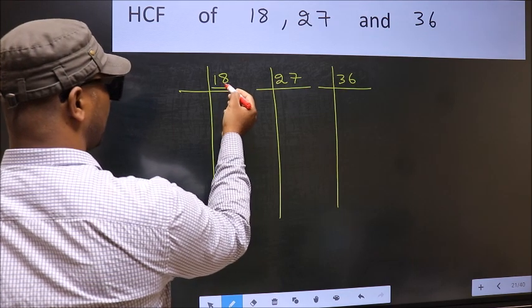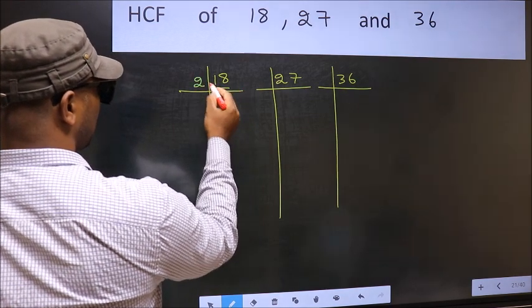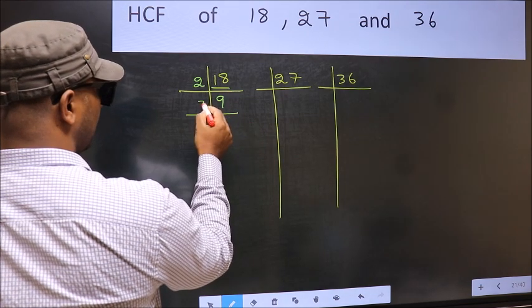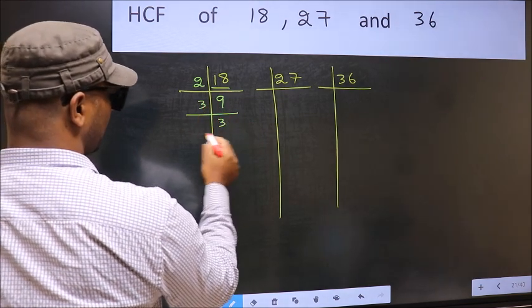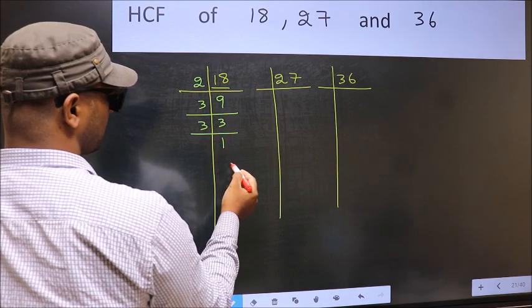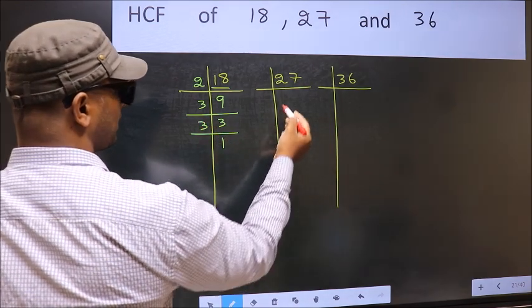Here you have 18. 18 is 2 times 9 equals 18. Now we have 9. 9 is 3 times 3 equals 9. Now 3 is a prime number, so 3 times 1 equals 3. Now the other number.